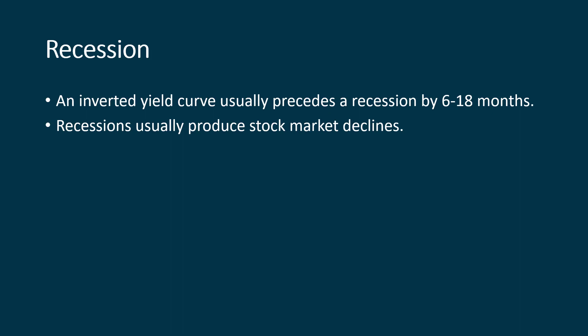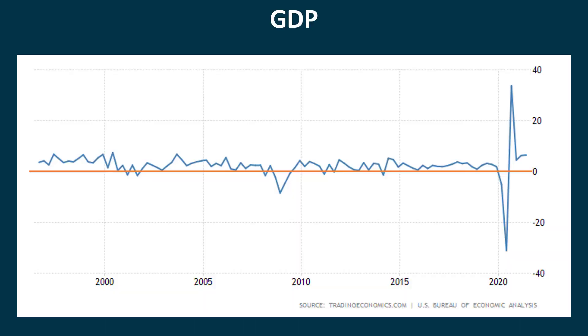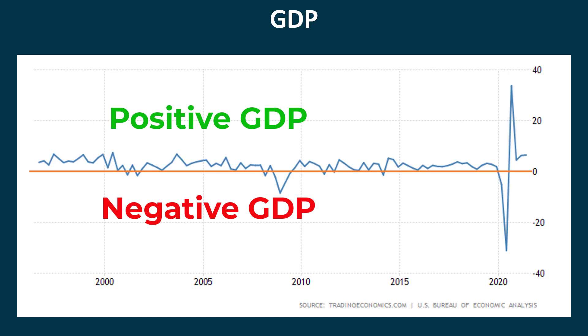Recessions usually produce stock market declines. We had a recession in 2000, preceded by an inverted yield curve in the late 90s. We had one before the housing meltdown in 2008 into 2009, and we had one before the COVID-19 pandemic. We may not know what is going to happen, but we just need to watch for something to fulfill the justification for markets selling off. Here is a chart from tradingeconomics.com showing GDP growth back to the mid-90s — anytime above the orange line is positive GDP growth, anytime below is negative. We just keep an eye on this.